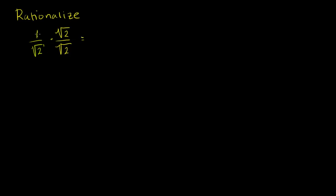So what's this going to be equal to? The numerator is going to be 1 times the square root of 2, which is the square root of 2. The denominator is going to be the square root of 2 times the square root of 2. Well, the square root of 2 times the square root of 2 is 2 — by definition, this squared must be equal to 2, and we are squaring it, we're multiplying it by itself. So that is equal to 2. We have rationalized the denominator. We haven't gotten rid of the radical sign, but we've brought it to the numerator, and now in the denominator we have a rational number.